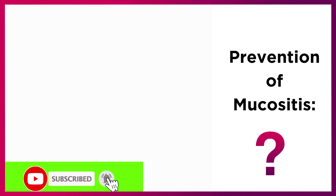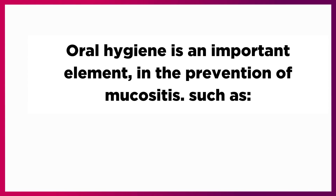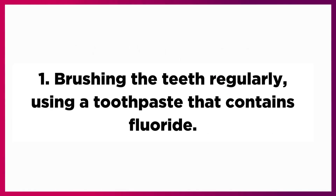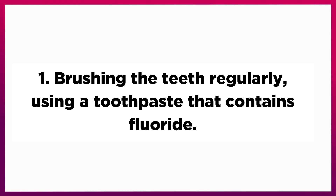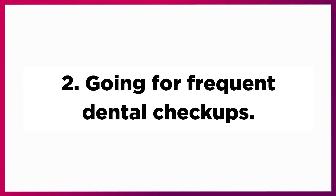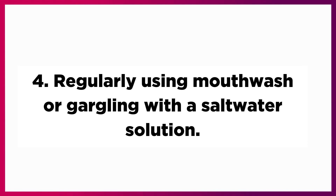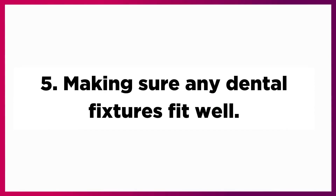Prevention of mucositis: It is not always possible to prevent mucositis. However, a person can take some steps to reduce their risk. Oral hygiene is an important element in the prevention of mucositis, such as: 1. Brushing the teeth regularly using a toothpaste that contains fluoride, 2. Going for frequent dental check-ups, 3. Using dental floss or interdental brushes to clean between the teeth, 4. Regularly using mouthwash or gargling with a saltwater solution, 5. Making sure any dental fixtures fit well.